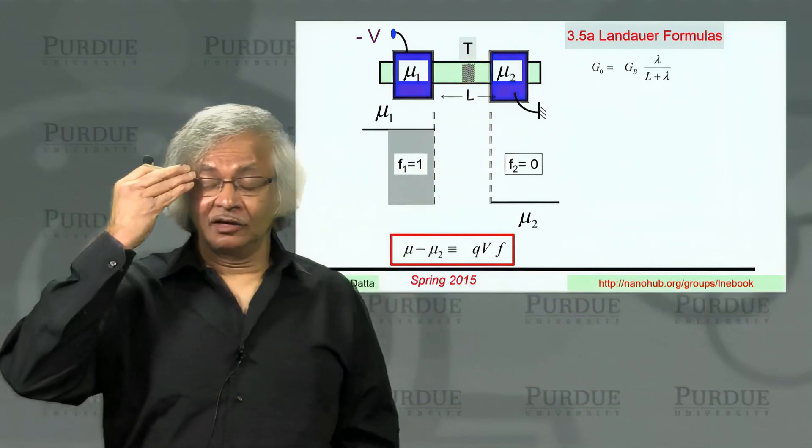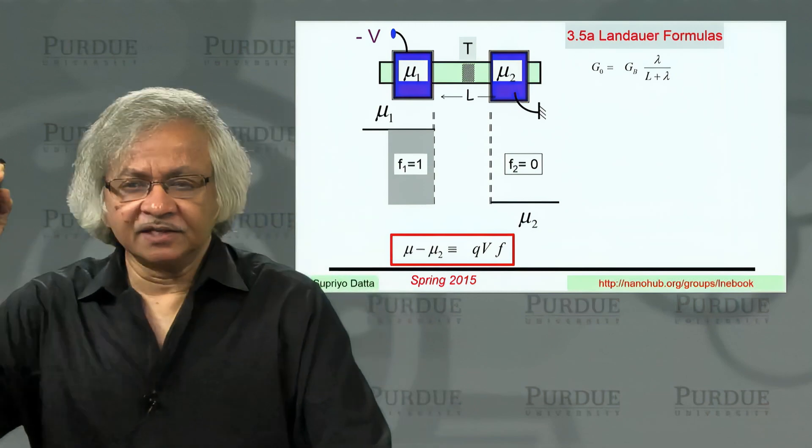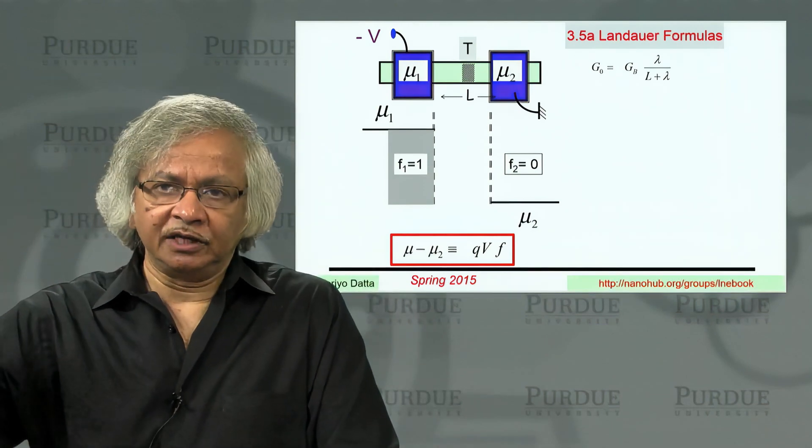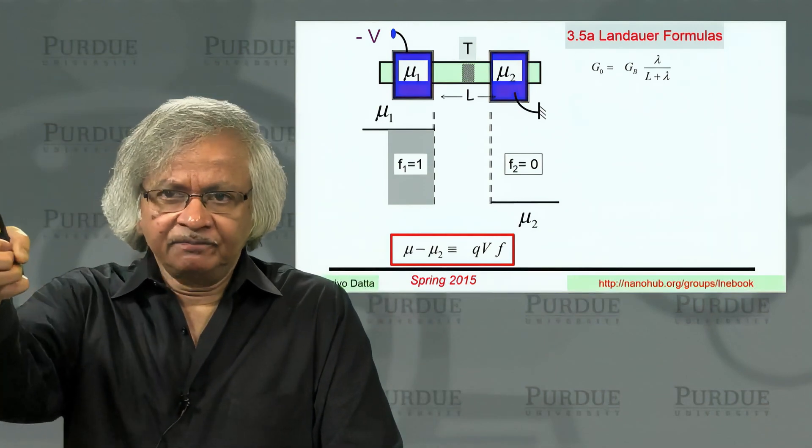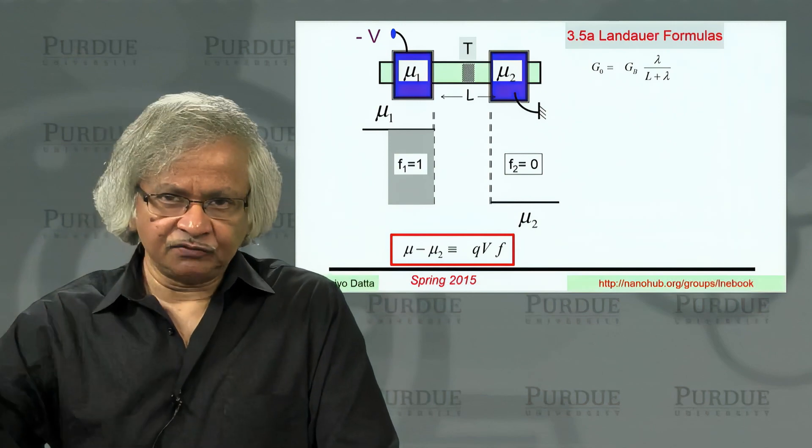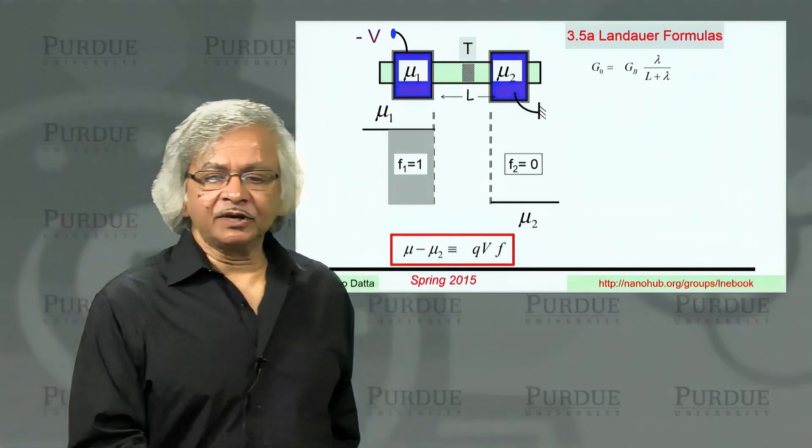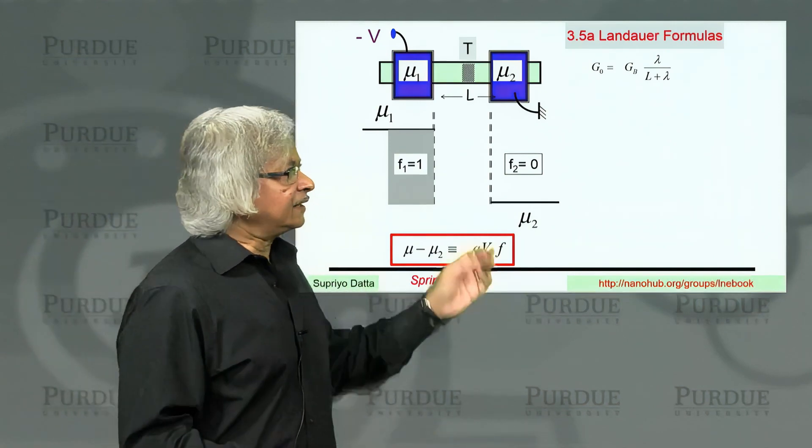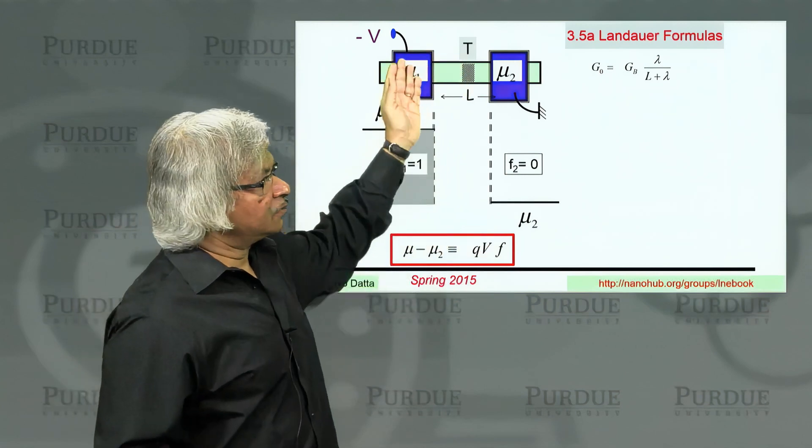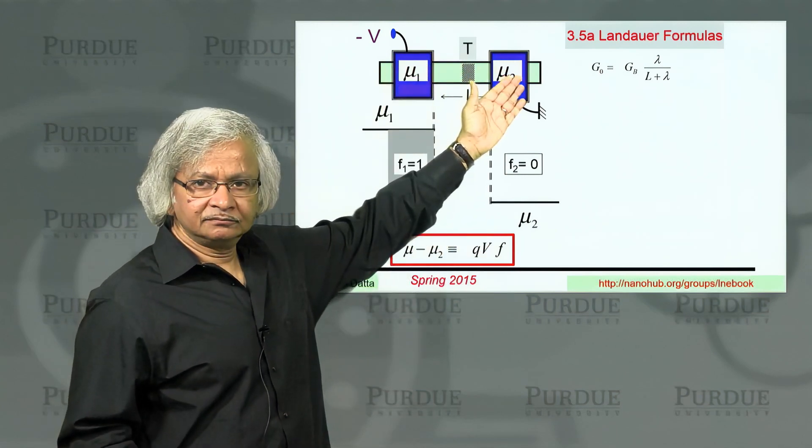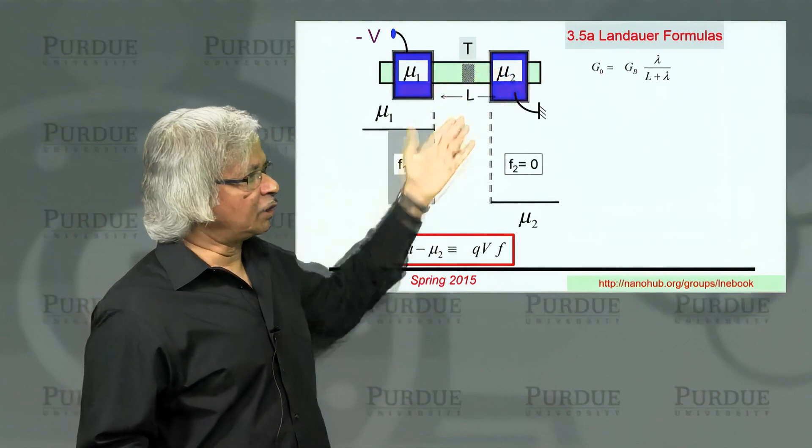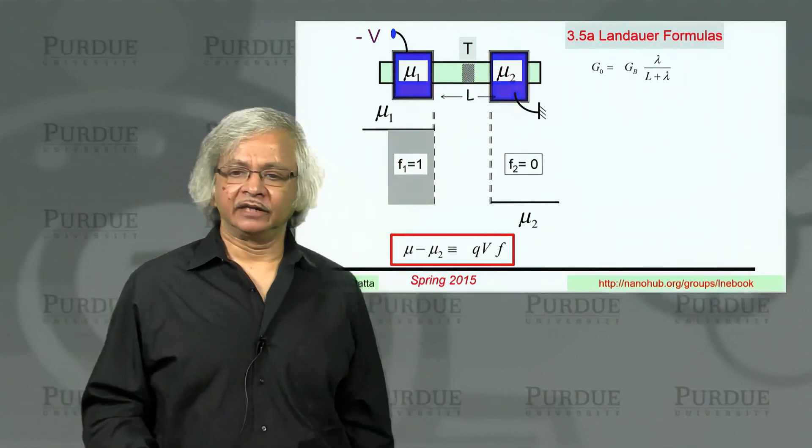So in terms of cars on a highway, it's as if there's a little toll booth there or a construction zone somewhere. Everywhere else, cars just flow freely. And the question you ask then is what would be the average flow, the current, and what would the potential profile look like?